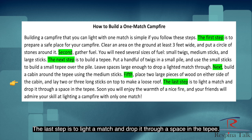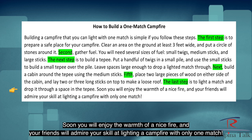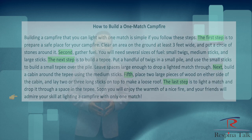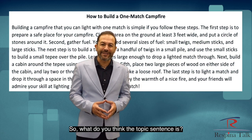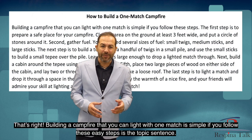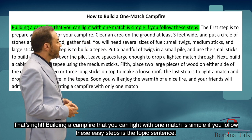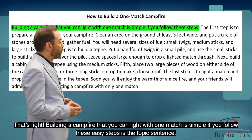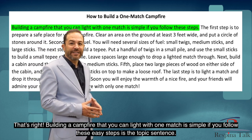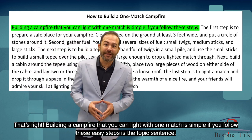The last step is to light a match and drop it through a space in the teepee. Soon you will enjoy the warmth of a nice fire and your friends will admire your skill at lighting a campfire with only one match. The topic sentence is: building a campfire that you can light with one match is simple if you follow these easy steps.